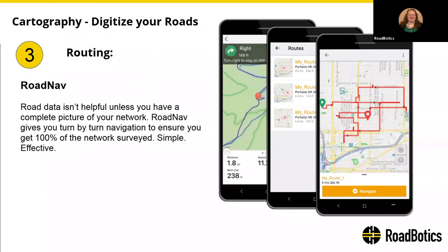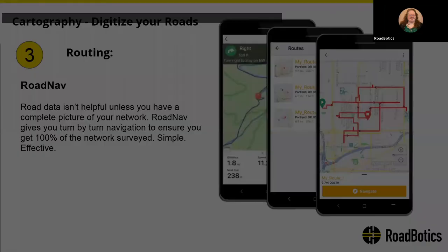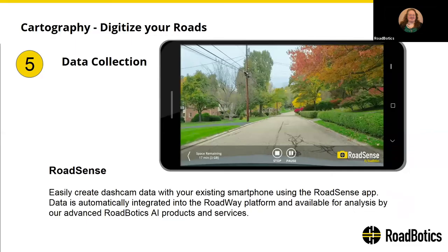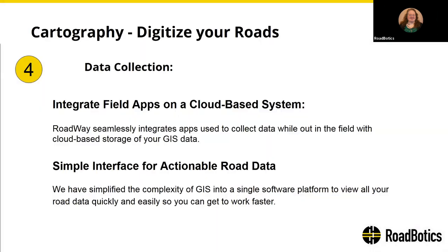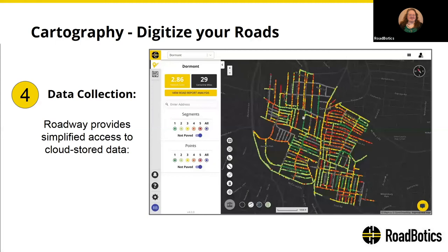With data collection, our app RoadNav gives turn-by-turn navigation for our routes, and RoadSense collects the imagery data for Roadbotics AI products and services. Field-collected data is stored in a cloud-based system accessed through our easy-to-use platform, Roadway.